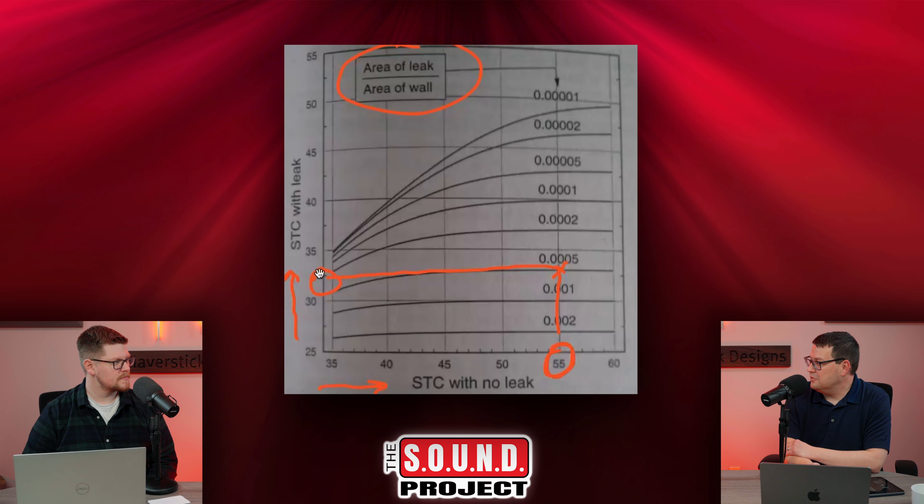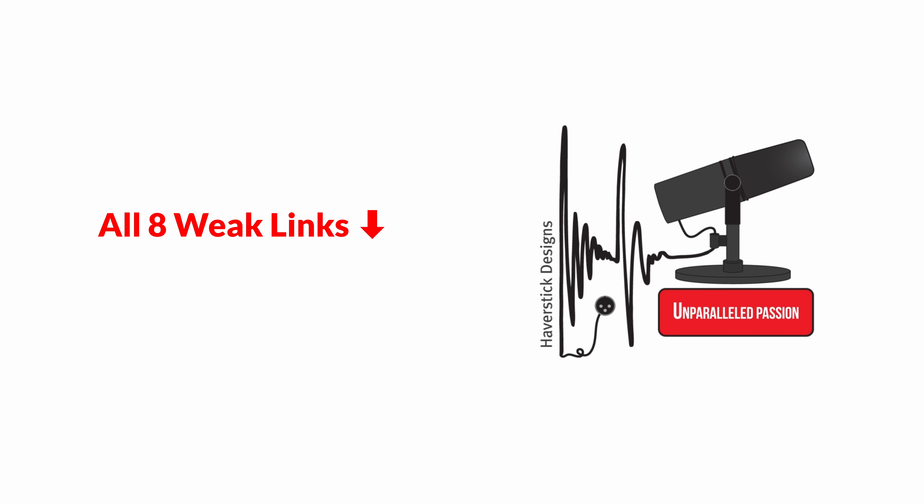An STC 55 wall with a gap the size of an electrical outlet ends up giving you about a 32 to 33 STC — which is like an apartment wall. That typical apartment wall is around 32 to 33 STC. So you've designed something that should be pretty good for a studio environment, but it performs no better than an apartment wall — all because of leaks and gaps. It doesn't have to be one big opening; it could be the sum of a bunch of small openings that created that leak-to-wall-area ratio. It's important to make sure you seal everything as airtight as possible and look at all penetrations.